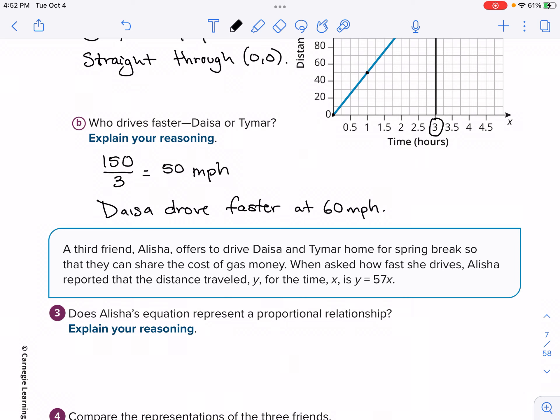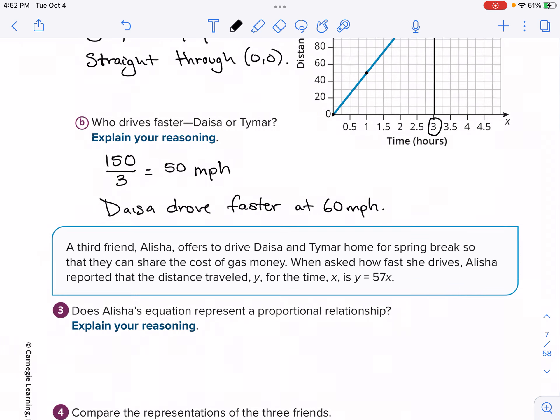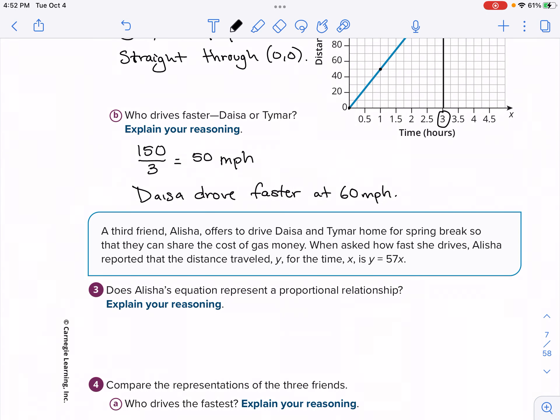Now we're introducing into this context, this story, a third friend. It says a third friend, Alisha offers to drive Daisy and Tamar home for spring break so that they can share the cost of gas money. When asked how fast she drives, Alisha reported the distance traveled Y. So this is Y, which is in terms of miles and X, which is time in terms of hours. And then we have this equation here.